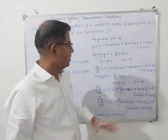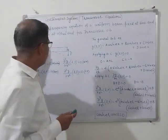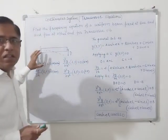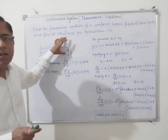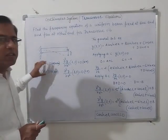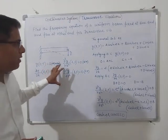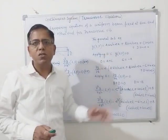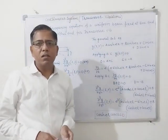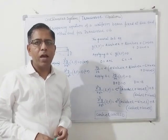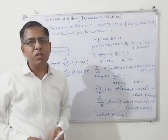So these are the boundary conditions for transverse vibrations: at the fixed end, deflection and slope are zero; at the free end, bending moment and shear force are zero. By applying those boundary conditions to the general solution equation, you can easily find the frequency values. I hope you have understood the continuous system with transverse vibration. Thank you very much.